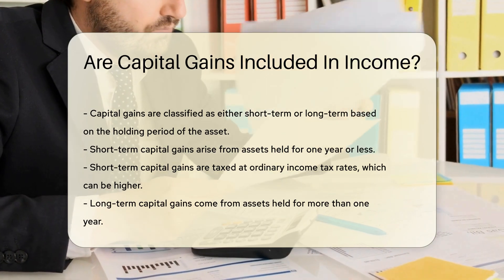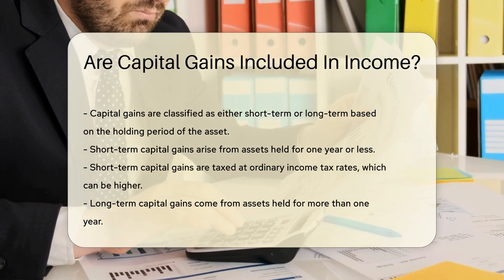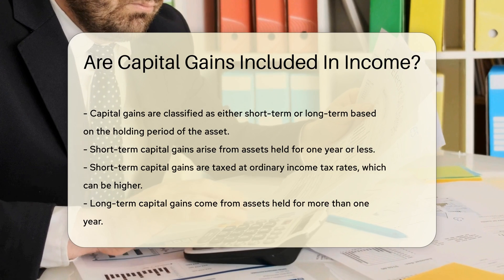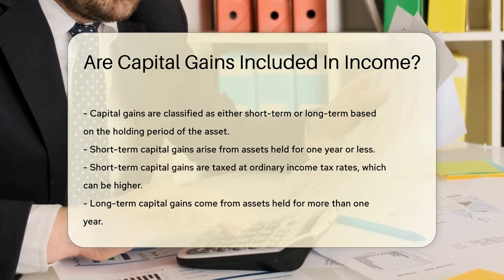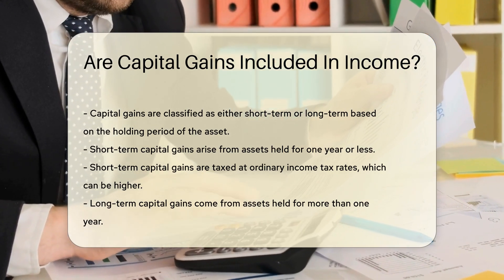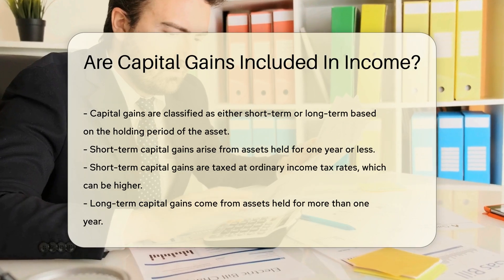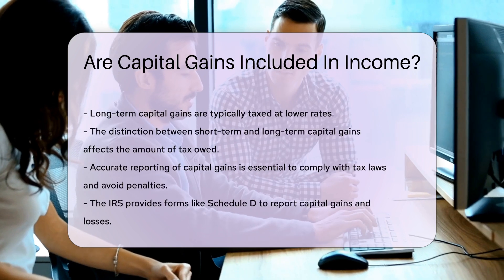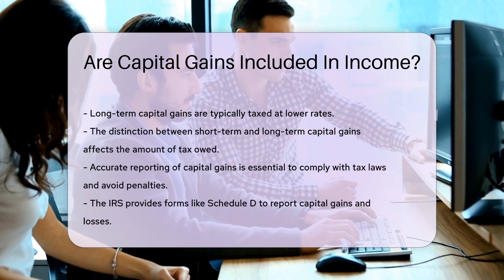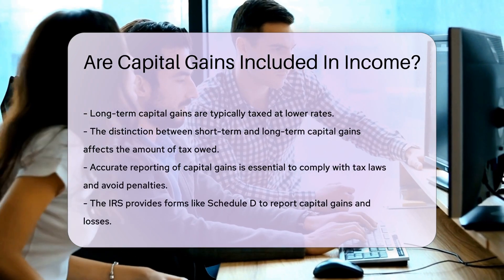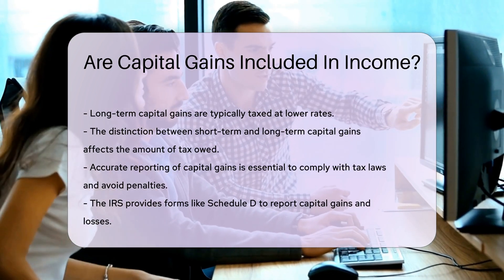Short-term capital gains arise from the sale of assets held for one year or less. These gains are taxed at ordinary income tax rates, which can be higher. Long-term capital gains come from assets held for more than one year and are typically taxed at lower rates. The distinction between short-term and long-term capital gains is significant because it affects the amount of tax you owe.